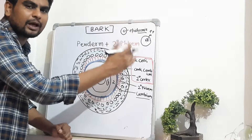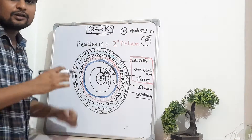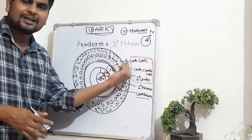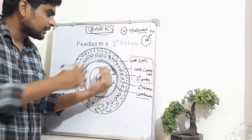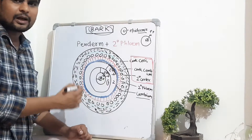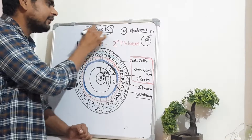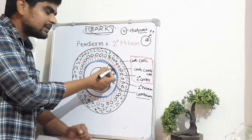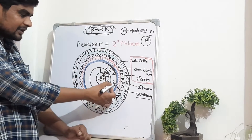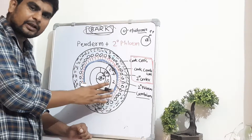The definition of bark refers to the outer parts of the stem excluding the cambium. The vascular cambium — shown here as the blue highlighted portion — is the boundary. Everything outside it constitutes bark.